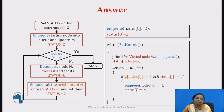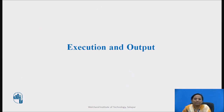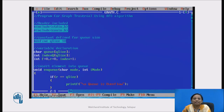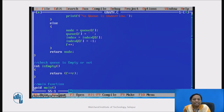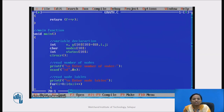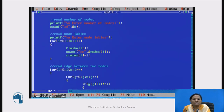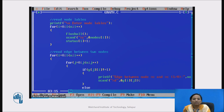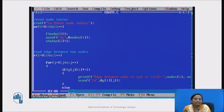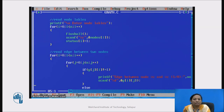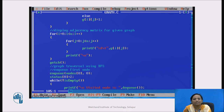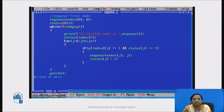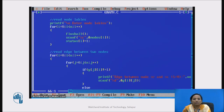This is the implementation of the BFS algorithm. Let us see the execution of the program — all the modules we discussed. Here we can see the variable declarations, enqueue function, dequeue function, isEmpty function, main function with variable declarations, reading number of nodes, reading node labels, and reading edge information between nodes with prompt messages and scanf to scan values into the adjacency matrix, then displaying the adjacency matrix. Let us now execute this program.